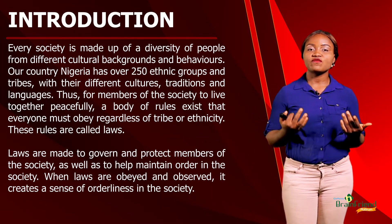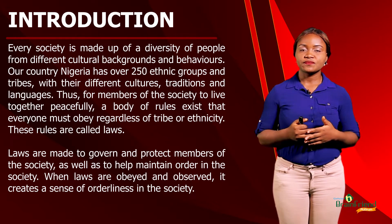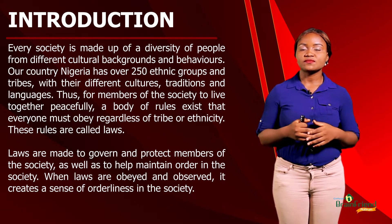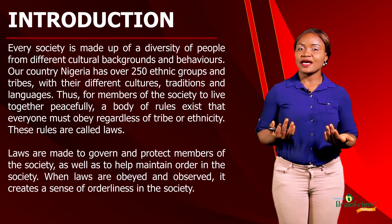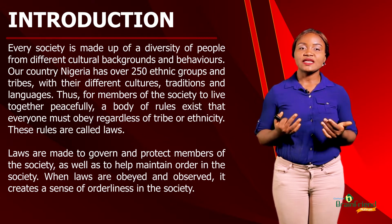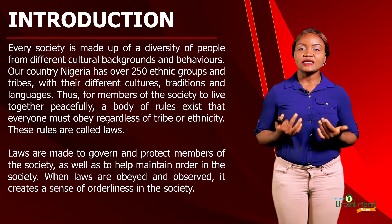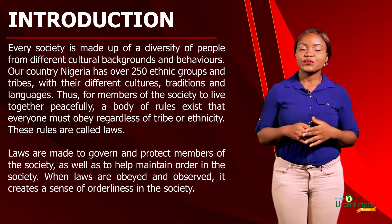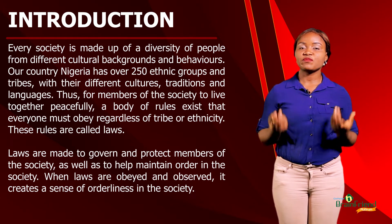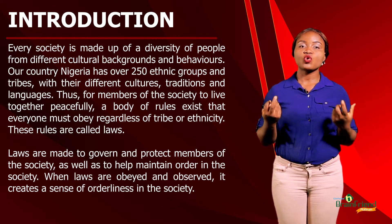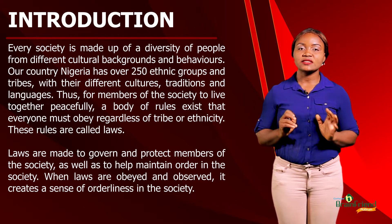In every society, there's a body of rules that guides and governs the citizens of that society. These rules are referred to as laws. Laws are made to protect and govern citizens of a country, as well as help to maintain order in that society. When these laws are obeyed, it helps to create an orderly environment. For instance, in Nigeria, we have over 250 ethnic groups, which creates a lot of diversity of people. For these people to coexist peacefully, there are certain laws made in Nigeria to help maintain orderliness in the country.